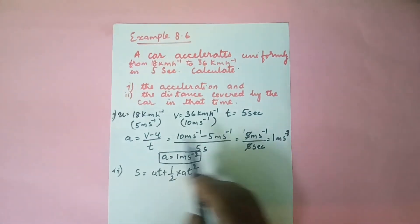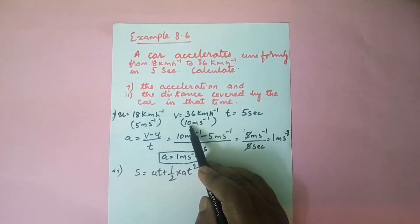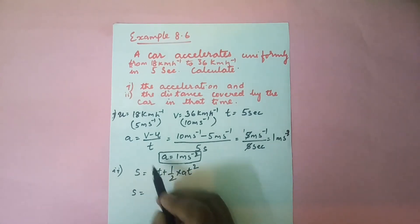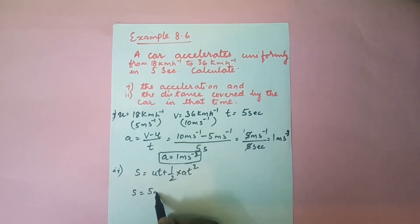So we have u, we have v, we have t also, and a also we got from the first question. Now substitute the values and find out. s = u is 5 m/s, that is into t, which is 5 seconds.